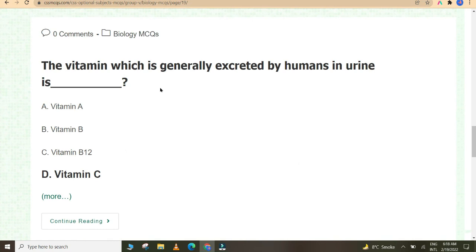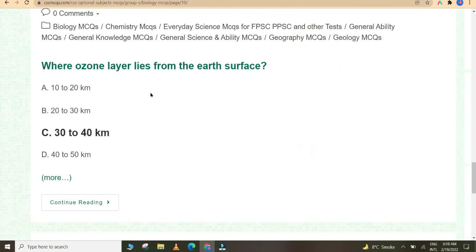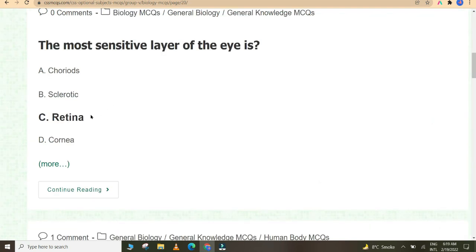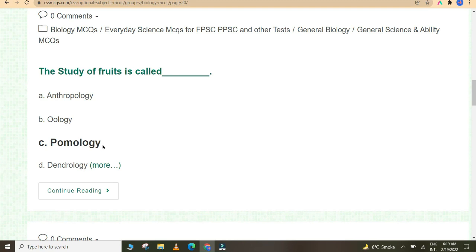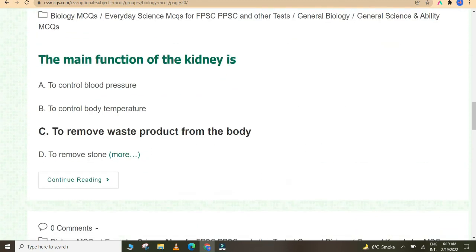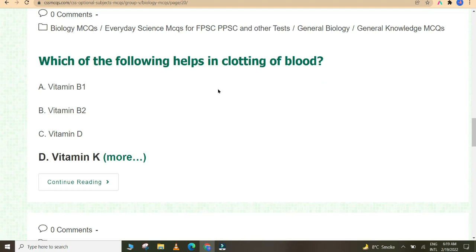Epidermis is the outermost layer of skin. The addictive drug in tobacco is nicotine. Vitamin A can be found in green vegetables. The vitamin which is generally excreted by humans in urine is vitamin C. Which vitamin can be synthesized by liver? Vitamin K. Where ozone layer lies from the earth's surface? 30 to 40 kilometers. The most sensitive layer of the eye is retina. The most common mineral salt present in sweat is sodium chloride. The study of fruits is called pomology.